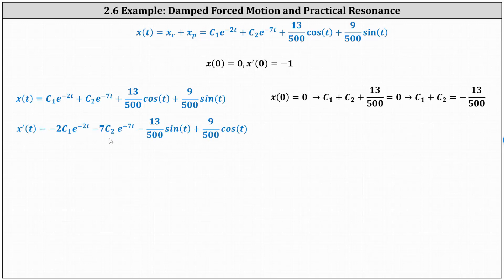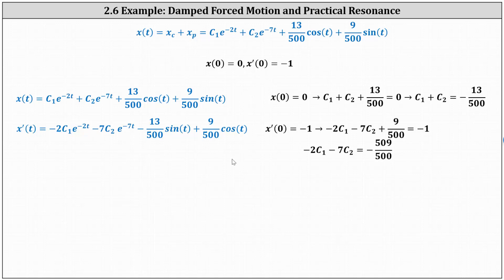Here is x'(t). Notice that to differentiate the first two terms we apply the chain rule. Using x'(0) = -1, we substitute zero for t and set equal to -1. Since e^0 = 1, we get -2c₁ - 7c₂. The third term drops out because sine zero is zero. Then we have plus 9/500 cosine zero, giving us -2c₁ - 7c₂ + 9/500 = -1. Subtracting 9/500 from both sides gives -2c₁ - 7c₂ = -509/500.